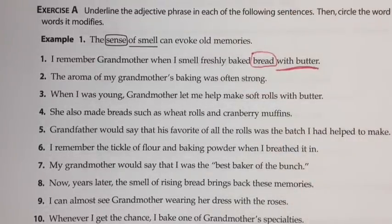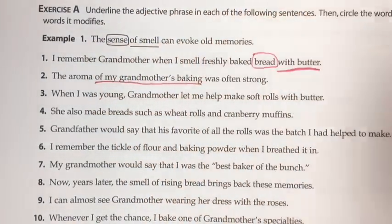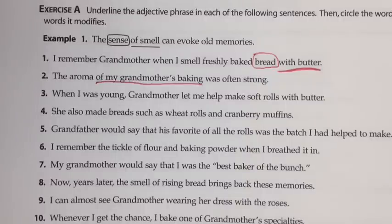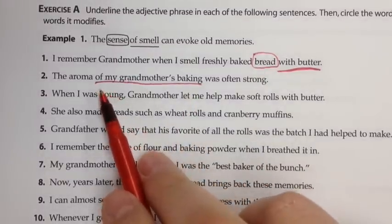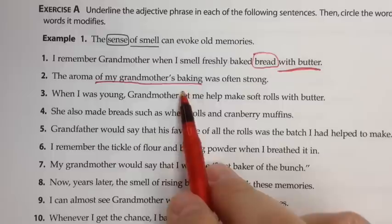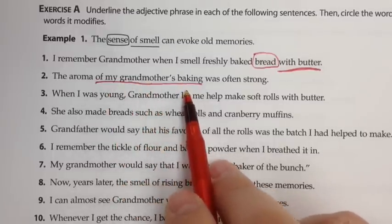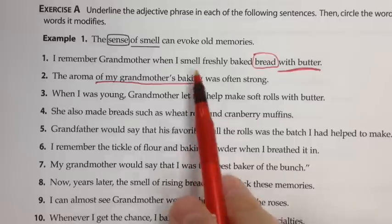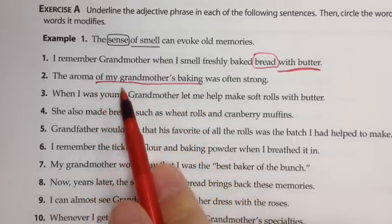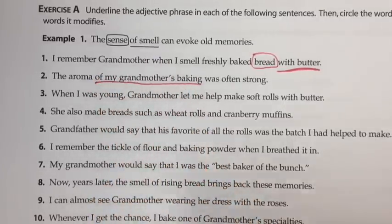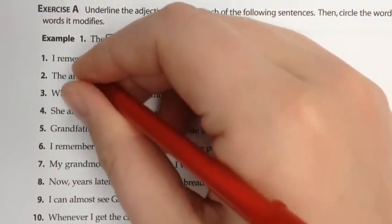Number two: the aroma of my grandmother's baking was often strong. So 'of my grandmother's baking' — 'of' is a preposition, and 'baking' is the object of the preposition, and 'my grandmother's' tells us about the baking. But all together, all of these words make up one prepositional phrase, and they all describe either which one or what kind of aroma. They go back to 'aroma.'